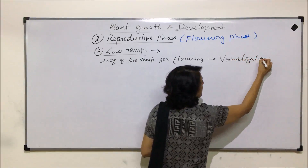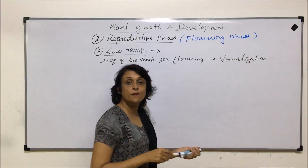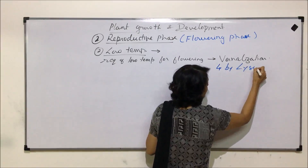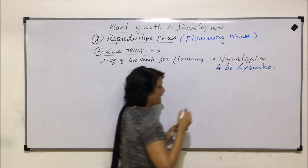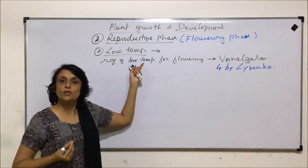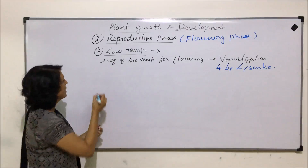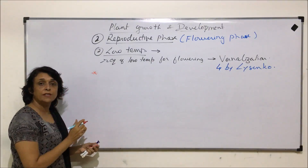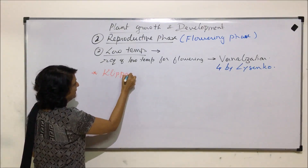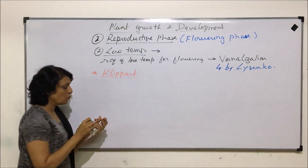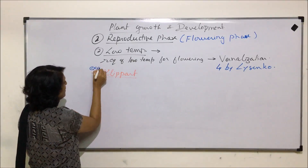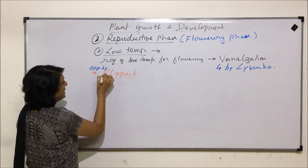The term vernalization was given by Lysenko. The concept that low temperature is required for flowering actually came from experiments done by scientist Clippart, who was working on wheat varieties.